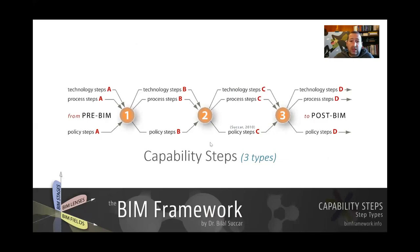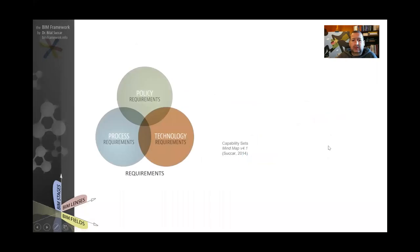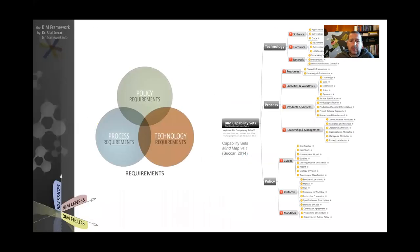If we go, for example, between two and three, which is set C, there are technology steps C, process steps C, and policy steps C. So what are these? Let's look at these using a mind map.